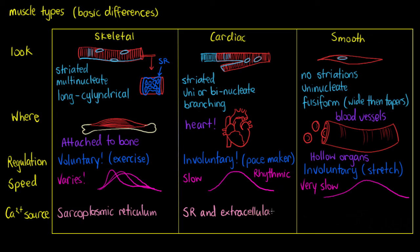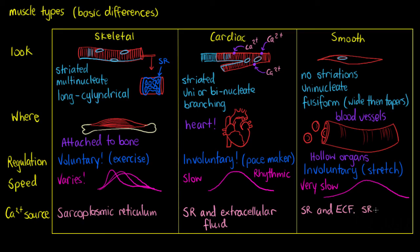In addition to the sarcoplasmic reticulum, cardiac muscle also obtains calcium from the extracellular fluid. Calcium floating outside the cell can enter through receptors or channels on the cell membrane. Smooth muscle is similar — it has a small amount of sarcoplasmic reticulum but also relies on extracellular fluid as a calcium source. Both cardiac and smooth muscle have a less dense sarcoplasmic reticulum compared to skeletal muscle because of this additional extracellular calcium source.